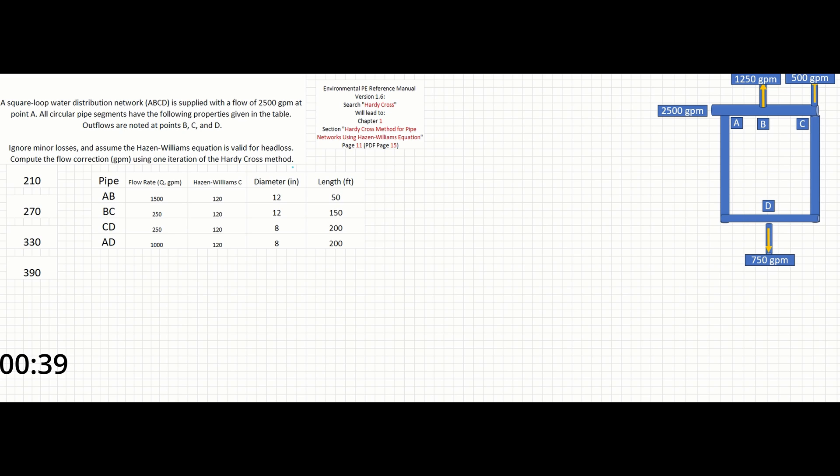In this problem, we are given a square loop water distribution network, which we can see displayed over to the right, and the following properties for each pipe given in the table. The properties we have are the distances between each point noted A to B, B to C, C to D, and A to D. We are given the flow rate in gallons per minute, the C value for the Hazen-Williams equation, the diameter of each pipe in inches, and the length of each pipe in feet.